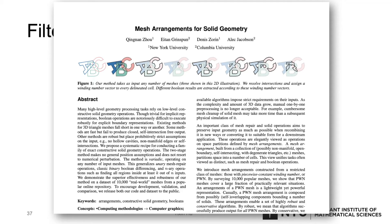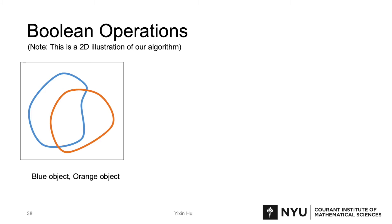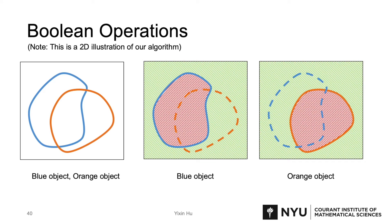Besides filtering, we extend this work to apply boolean operations on non-manifold winding number surfaces. For example, we have an input consisting of two surfaces, blue and orange. After the region is tetrahedralized, for the blue surface, we know that the elements in the red region are inside and the elements in the green region are outside by using winding number, and the same for the orange surface. So for example, if we want to compute the union of these two surfaces, we can just extract the surface of the tetrahedra inside the blue surface or inside the orange surface.